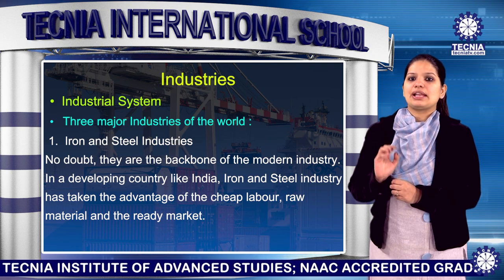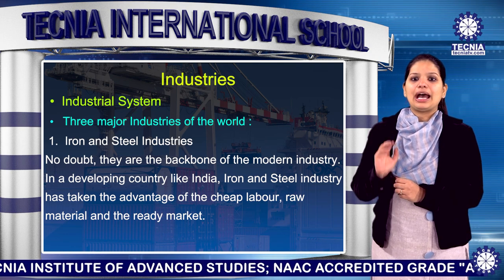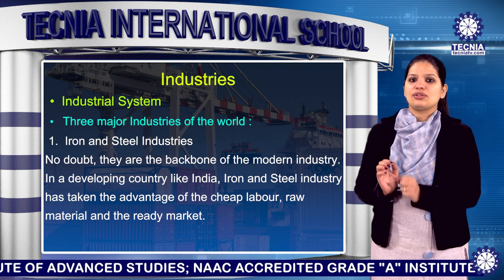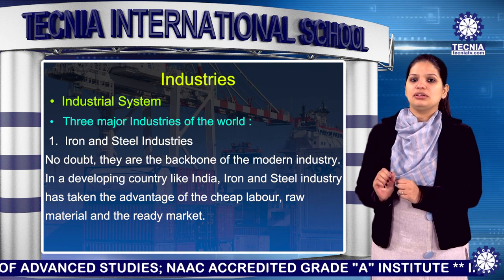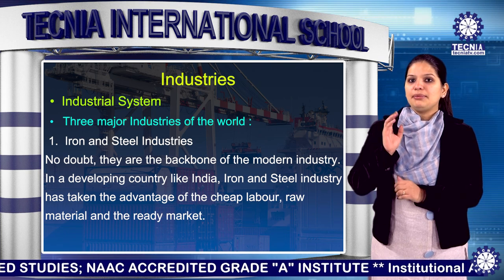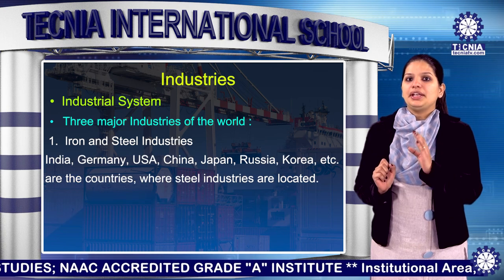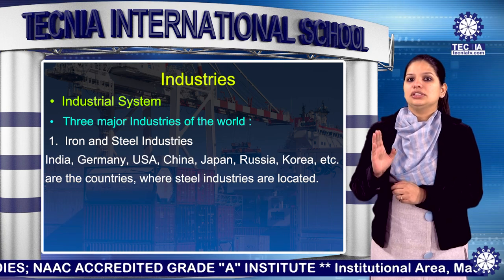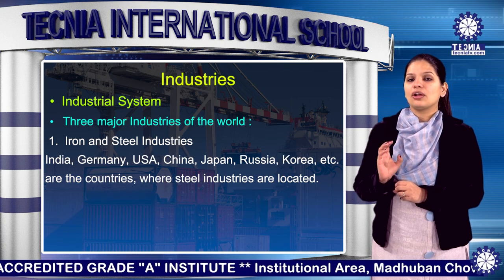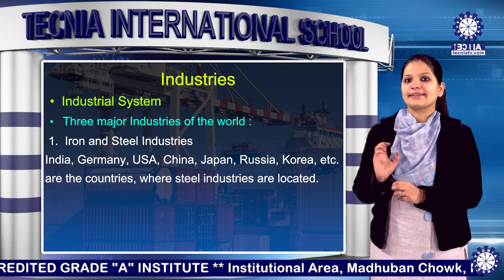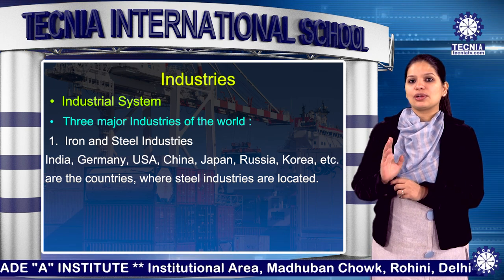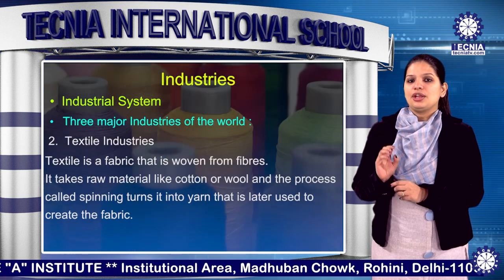In a developing country like India, the iron and steel industry has taken advantage of cheap labour, raw material and the ready market. India, Germany, USA, China, Russia, Korea, etc. are the countries where steel industries are located.